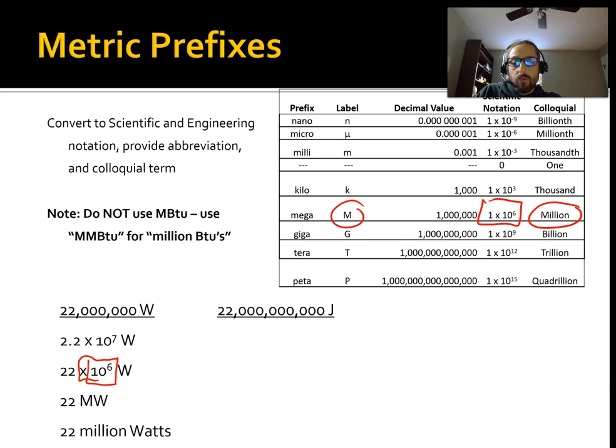So we'll do joules, 22 billion joules as an example. So 2.2 times 10 to the 10th. Subtract 1 to get to 22 times 10 to the 9th joules. So let's figure out what... 10 to the 9th is giga. So 22 gigajoules. And then that, the colloquial term, is billion, 22 billion joules.